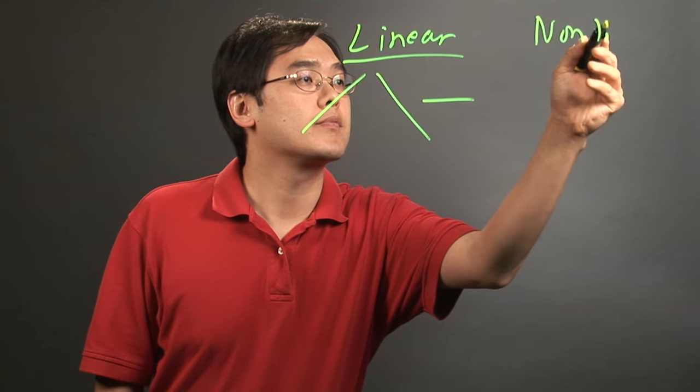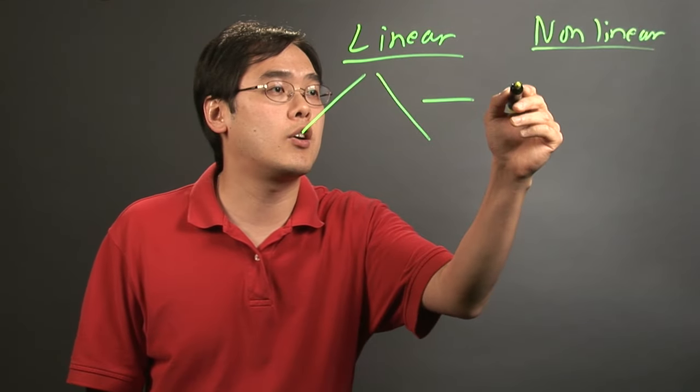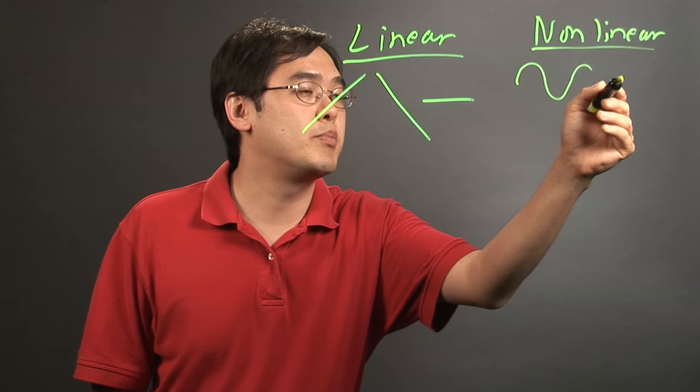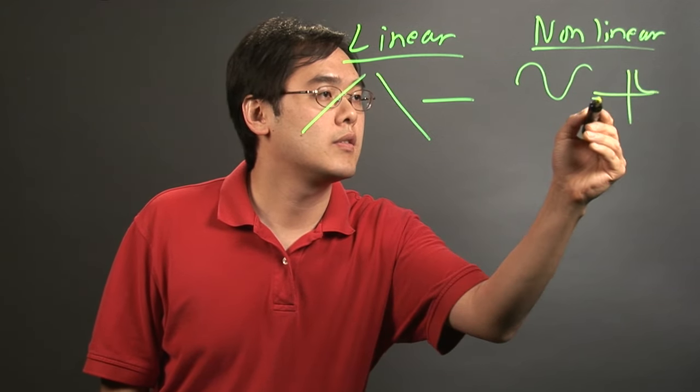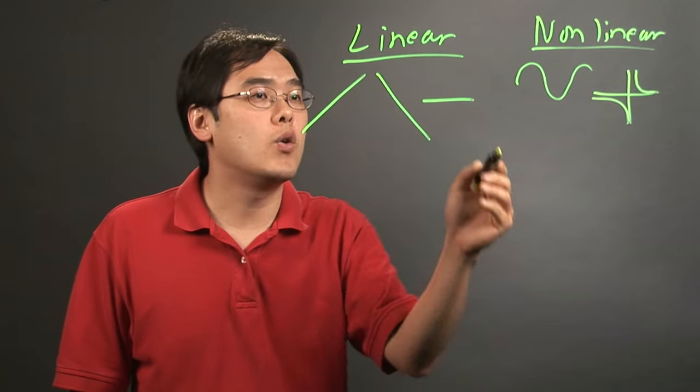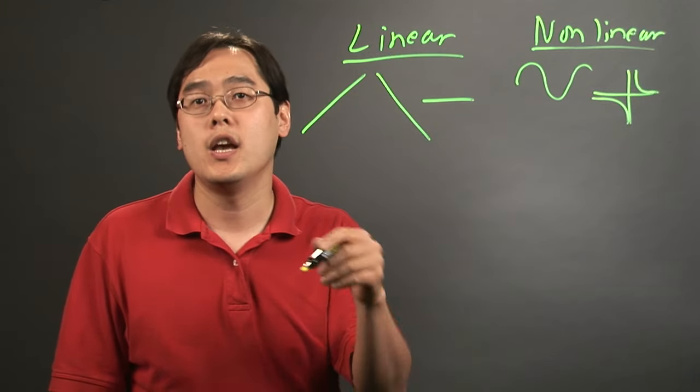Now nonlinear is basically a graph that's not that of a line. It can be a curve, it can be a split graph like that, or any graph that's not that of a line.